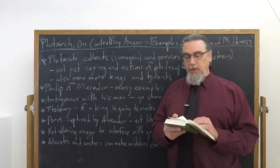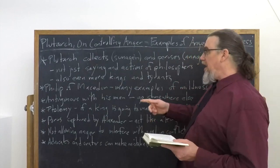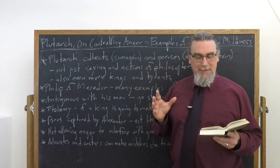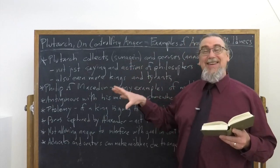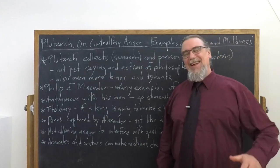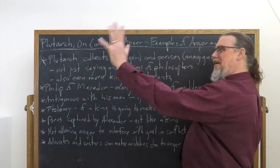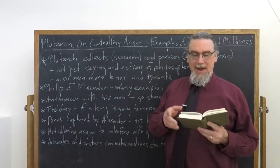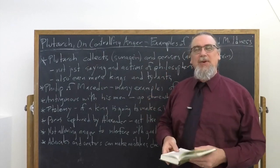Who else does Plutarch bring up? This guy, Antigonus, with his men, they're saying bad things about him once again, near his tent. He can hear them. They're off on campaigns. And he says, listen, buddies, go over there so I can't hear you reviling me. Go further off to abuse me. Why? Because he knows that he's liable to get angry with them if he keeps listening to this.